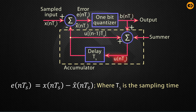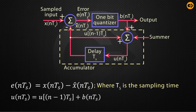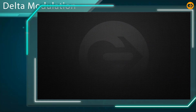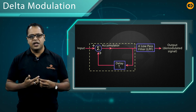u(nTs) is generated by the lower summer block and u(nTs) is equal to u((n-1)Ts) plus d(nTs). This u(nTs) is then delayed by one delay circuit. The delay circuit delays the input message signal and x̂(nTs) is generated.